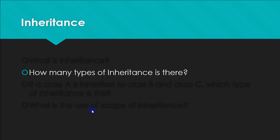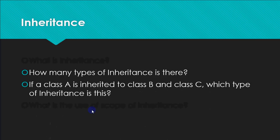So the five types of inheritance are: single, multiple, multi-level, hierarchical, and hybrid. A question may be asked like: if class A is inherited to class B and class C, which type of inheritance is this? Since there is one base class and two derived classes, it is hierarchical inheritance.